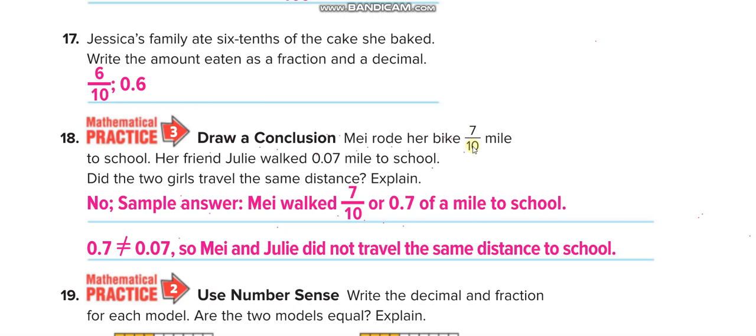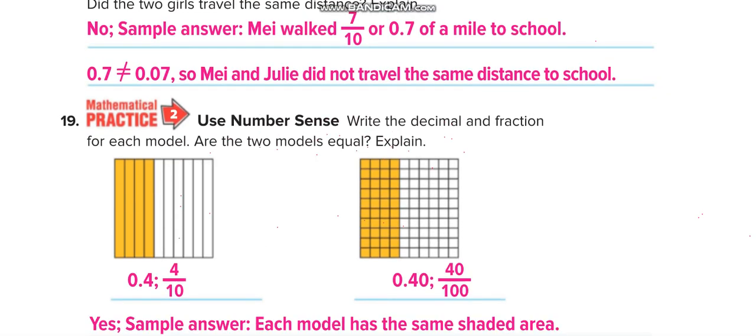May rode her bike 7 over 10 miles, which means 7 tenths, or 0.7. Her friend Julie walked 0.07 mile to school. Did the two girls travel the same distance? No, 7 over 10 is 0.7, and the other one is 0.07. This one is 7 tenths, this one is 7 hundredths. So no, they're not the same. 0.7 is not equal to 0.07, but 0.7 is equal to 0.70.